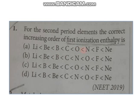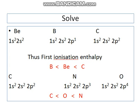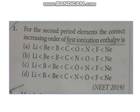Looking at the options: in the case of beryllium and boron, boron has lower ionization enthalpy than beryllium. For oxygen and nitrogen, nitrogen has higher ionization enthalpy than oxygen due to the half-filled 2p3 stability. Option C is correct.